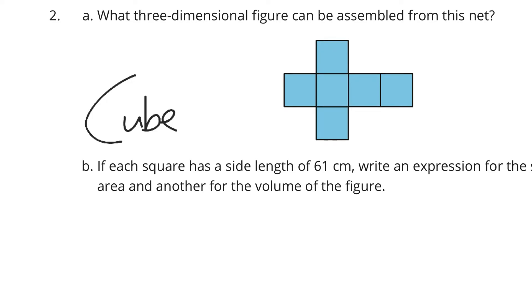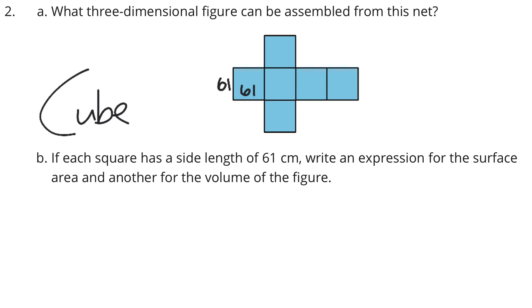If each square has a side length of 61 centimeters, write an expression for the surface area and another for the volume of the figure. Well, 61 squared gets me the area of each of these little squares. And so we could say since there's 6 of them, surface area is equal to 6 times that edge length squared. In other words, 6 times 61 squared square centimeters is the perfect expression here for the surface area.